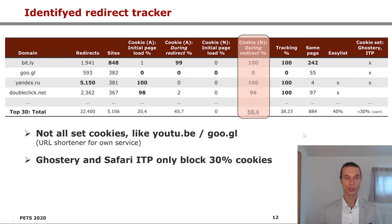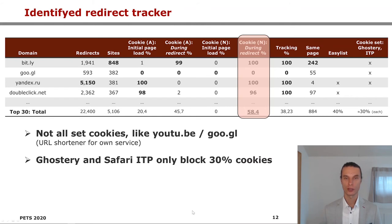In addition, we see that there are also some trackers that do not save any cookies on the user's machine, like YouTube or Google, which are usually URL shorteners for their own service. We also looked into the Ghostery plugin and Safari Intelligent Tracking Prevention, claiming to block redirect tracking as well. In our studies, only 30% of the cookies could be blocked using both countermeasures.